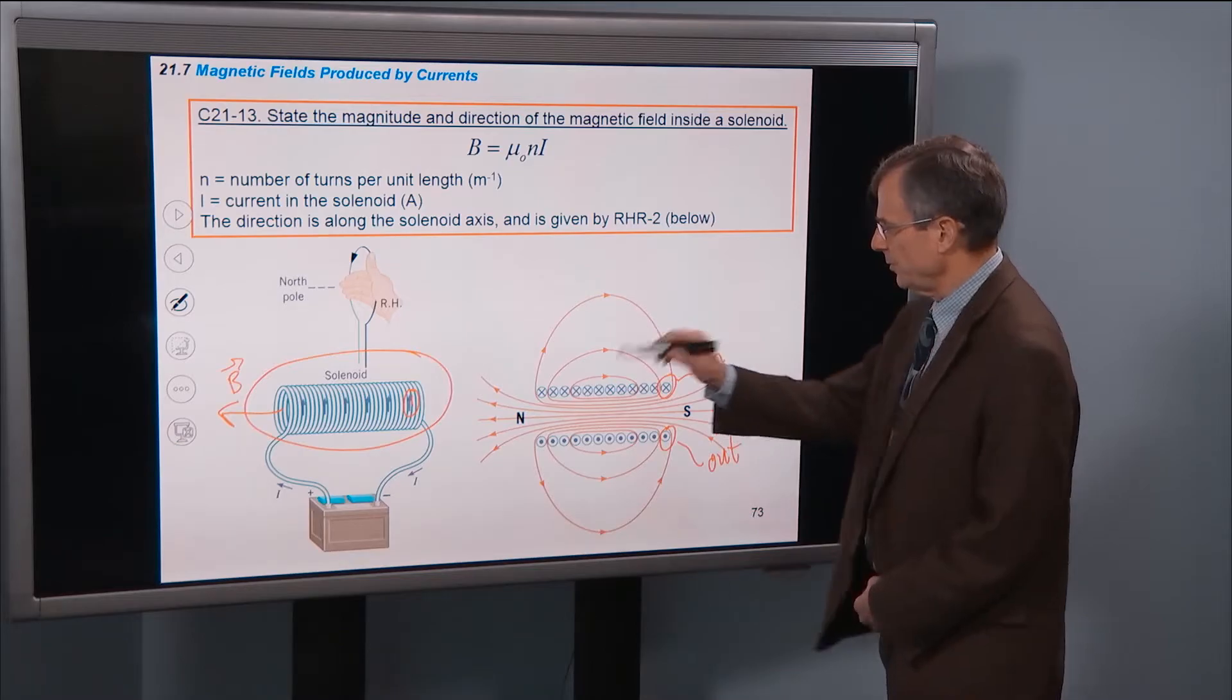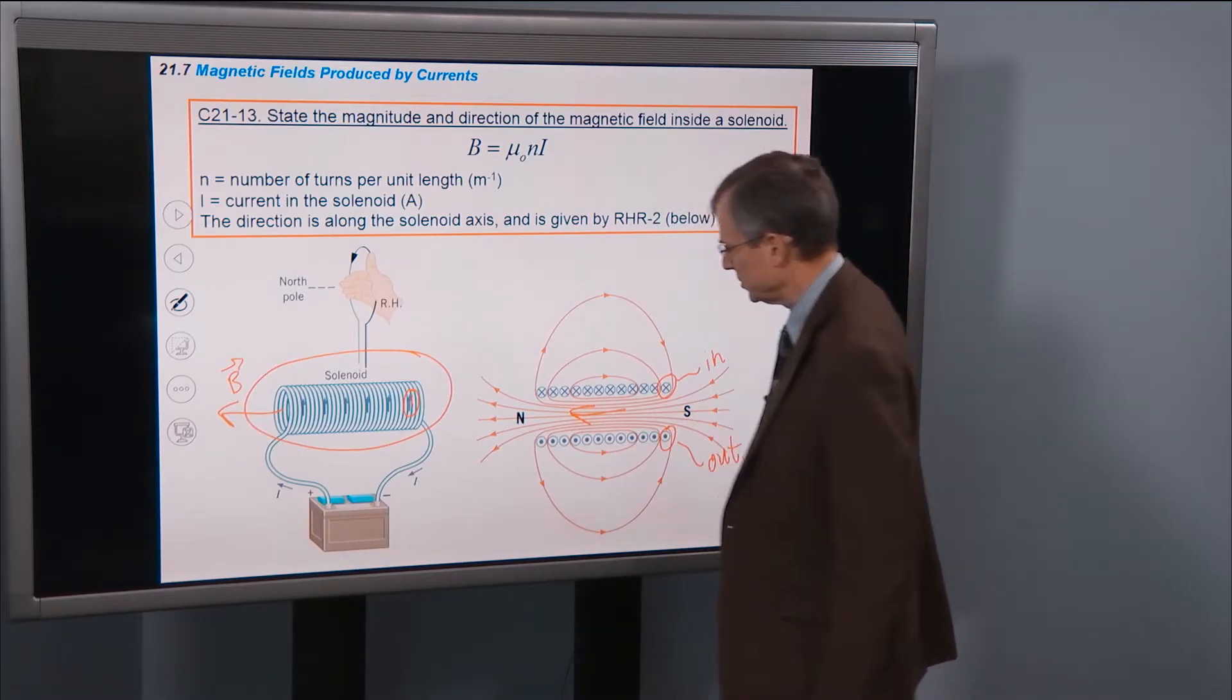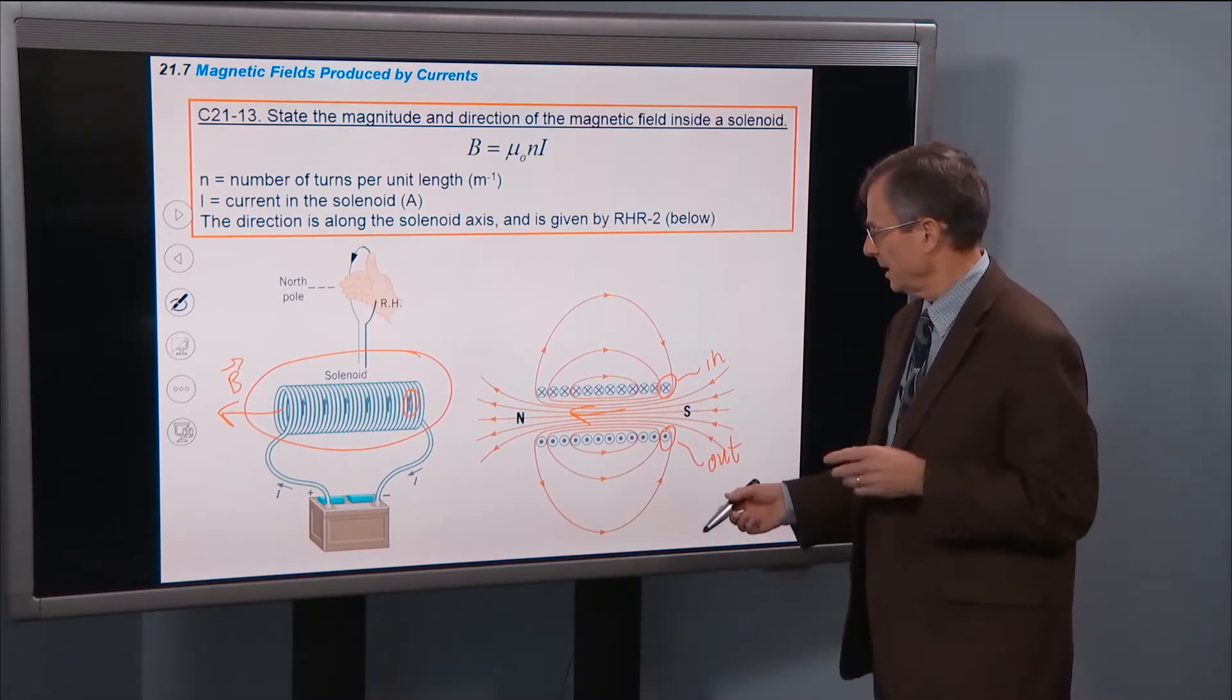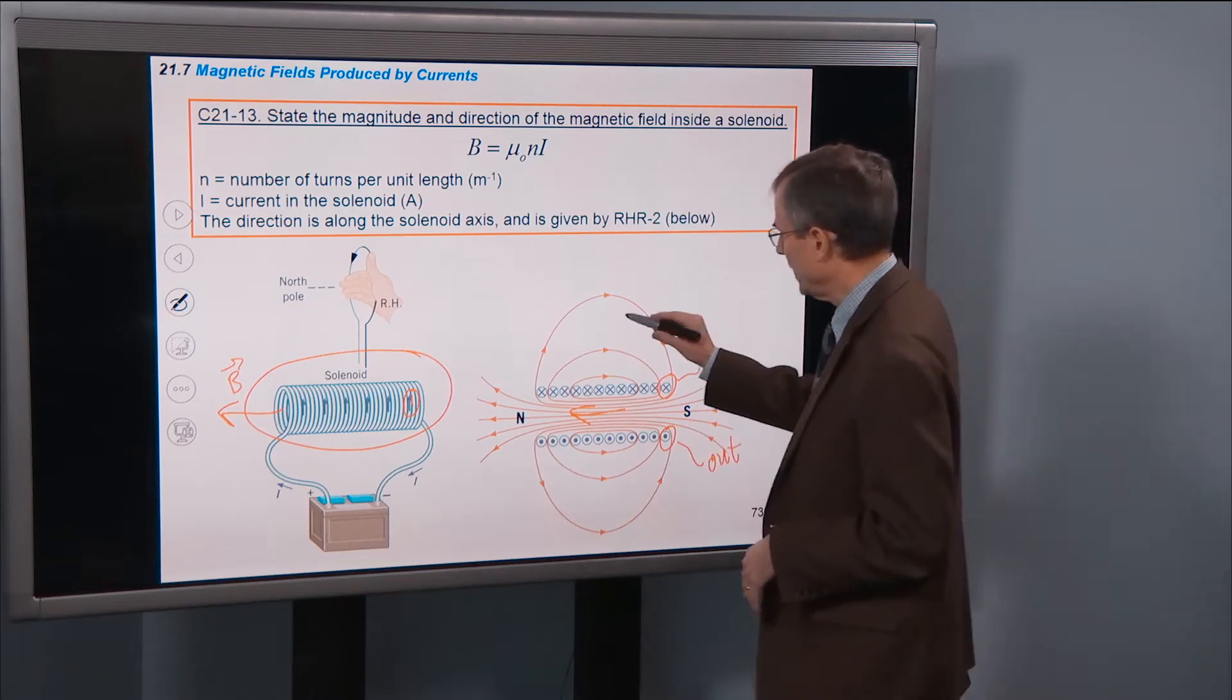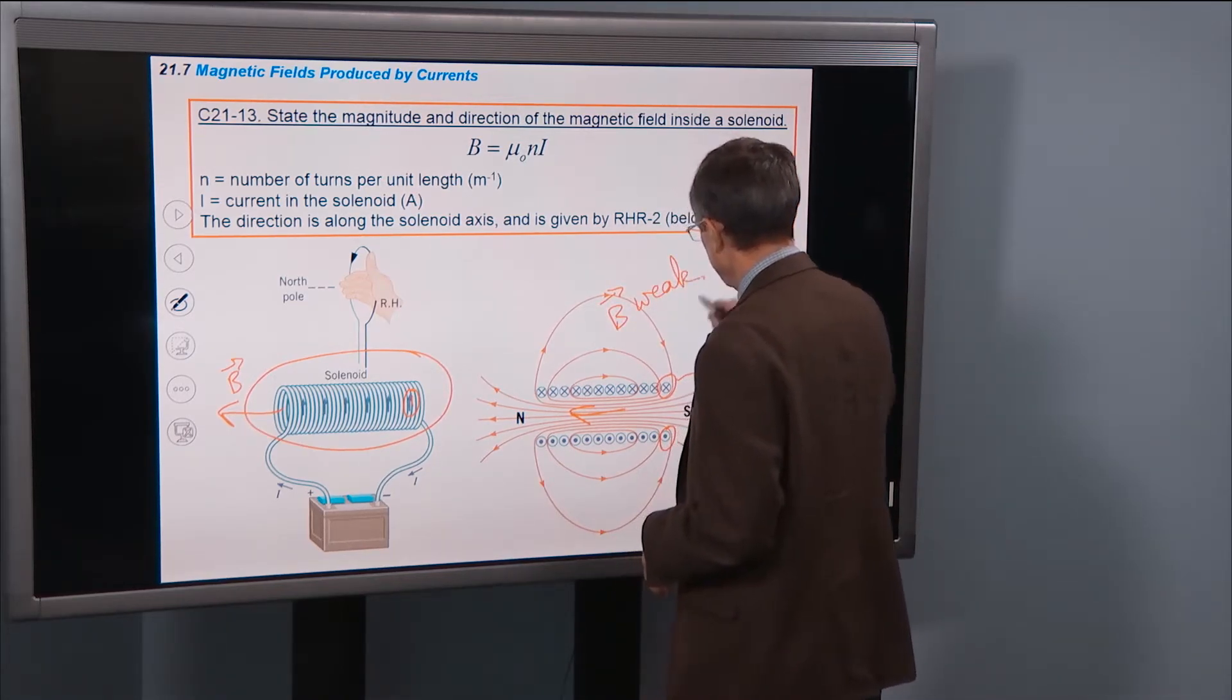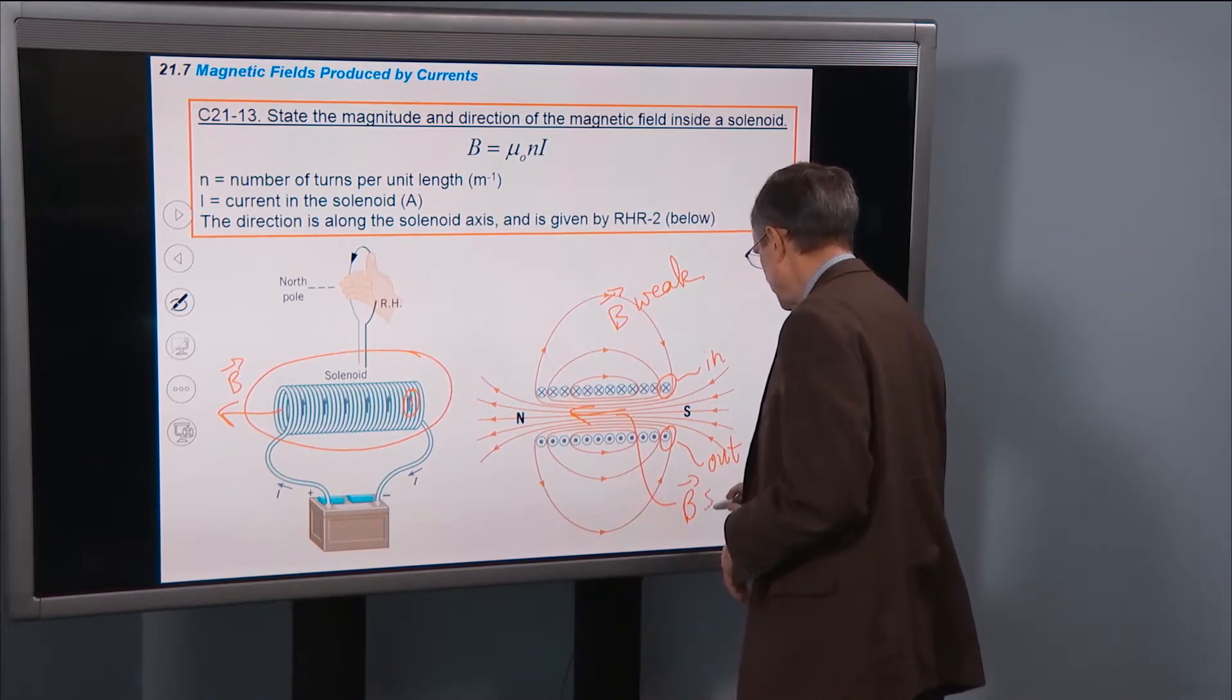And as we've worked out with the right-hand rule, the magnetic field inside the solenoid is not only pointing to the left, but it's also quite strong. As we saw in the demo, the magnetic field out here is weak. And the magnetic field inside is strong.